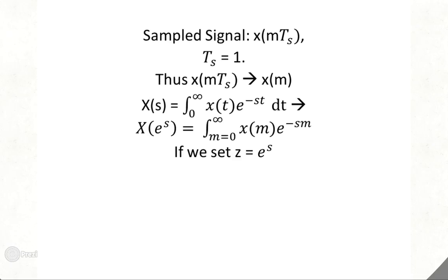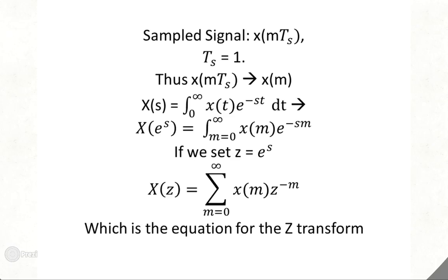We then set Z equal to e^s, and we get X(z) is the summation from 0 to infinity of X(m) times z^(-m), which is the equation for the Z-transform.